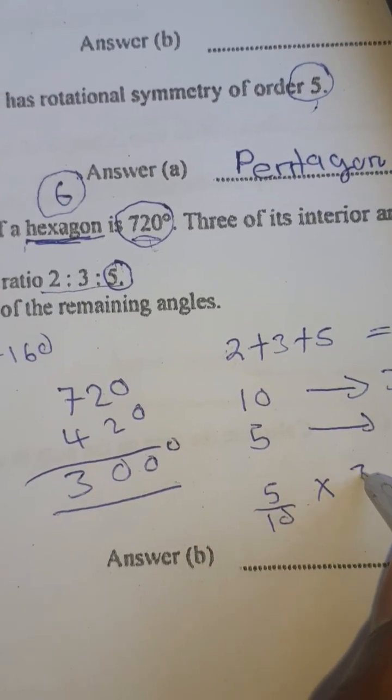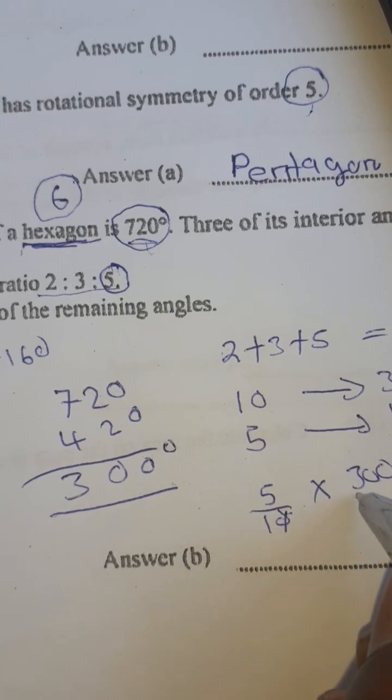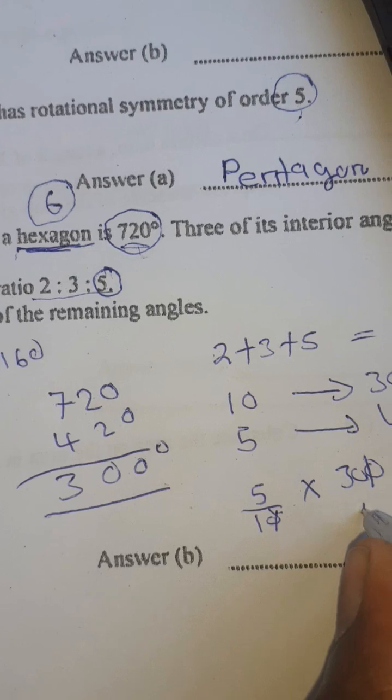5 over 10 multiply by 300. 10 into 300 we get 30. 5 times 30 you get 150. So 150 is the largest remaining angle.